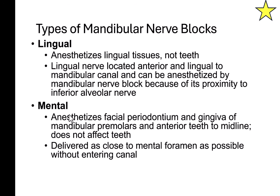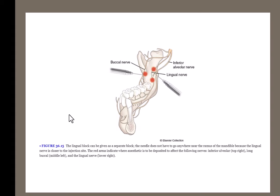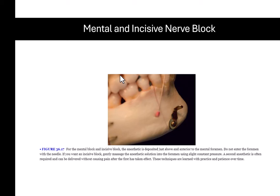The mental nerve block and incisive nerve block are commonly confused, so let's look at the difference. The inferior alveolar nerve and lingual nerve run in proximity; depositing near the inferior alveolar nerve numbs all mandibular teeth, and retracting slightly targets the lingual nerve for lingual tissues. There's also a buccal block, which is a separate option that numbs only the buccal tissues of the mandibular posterior region, not the teeth.